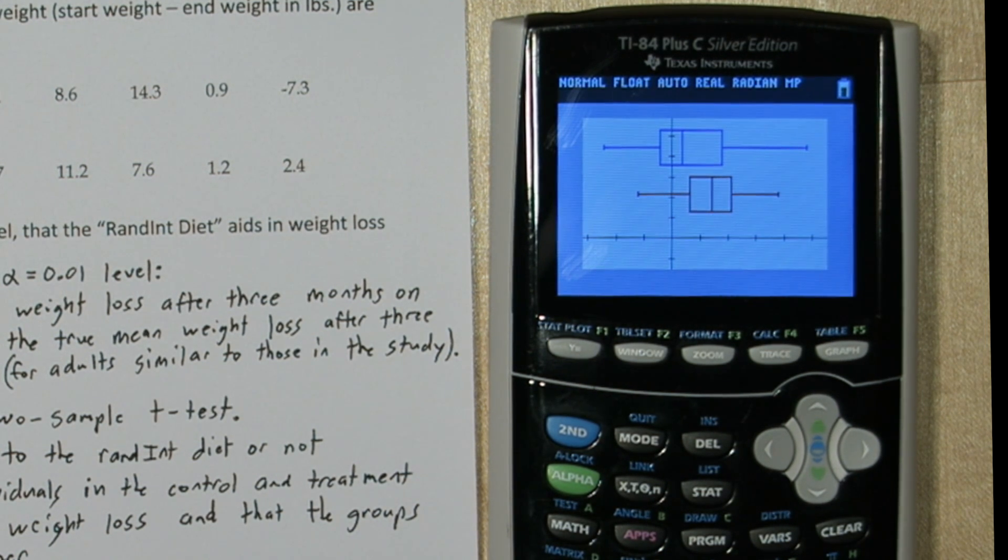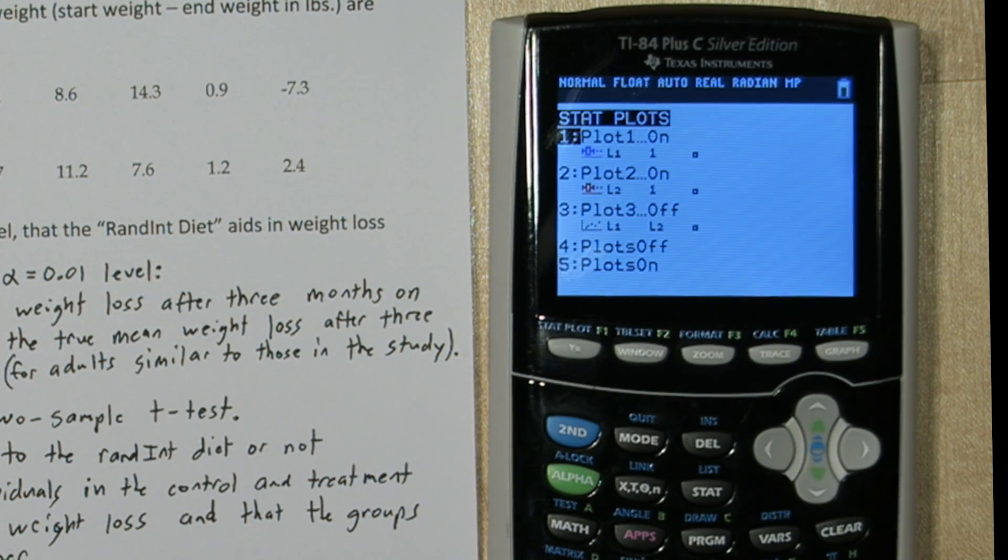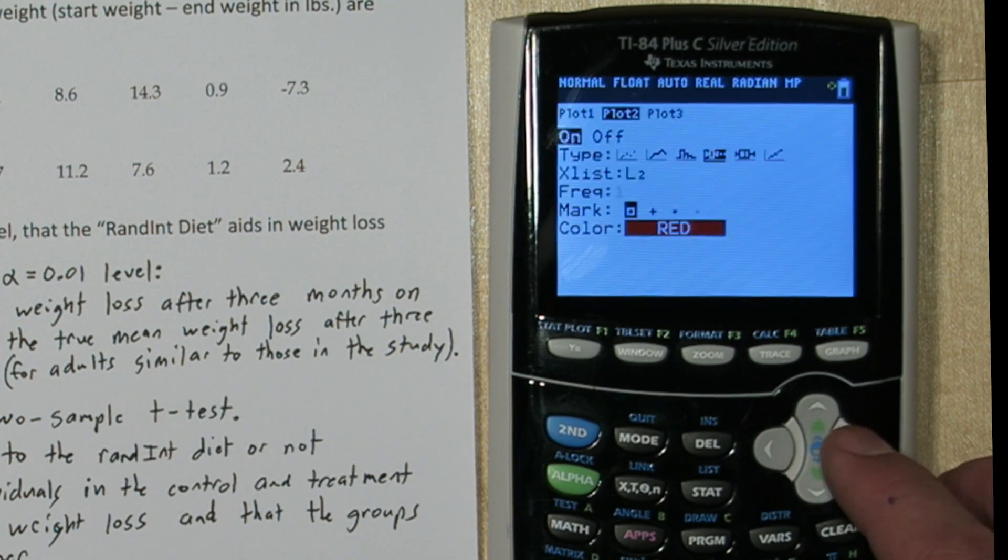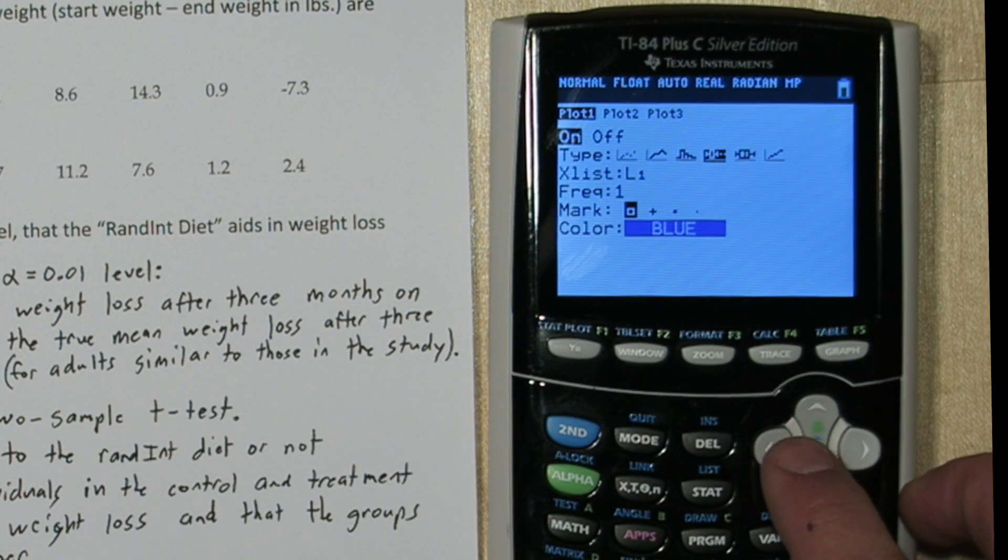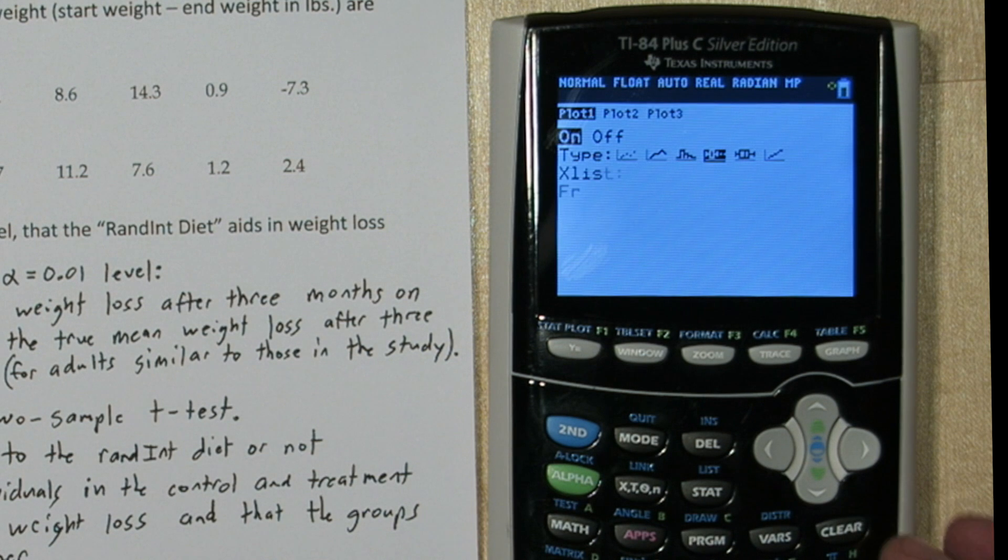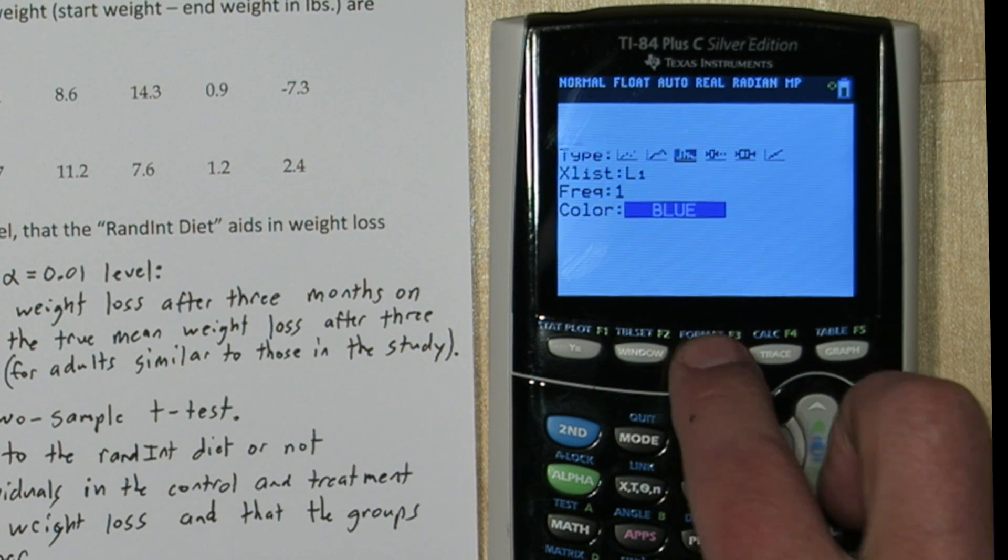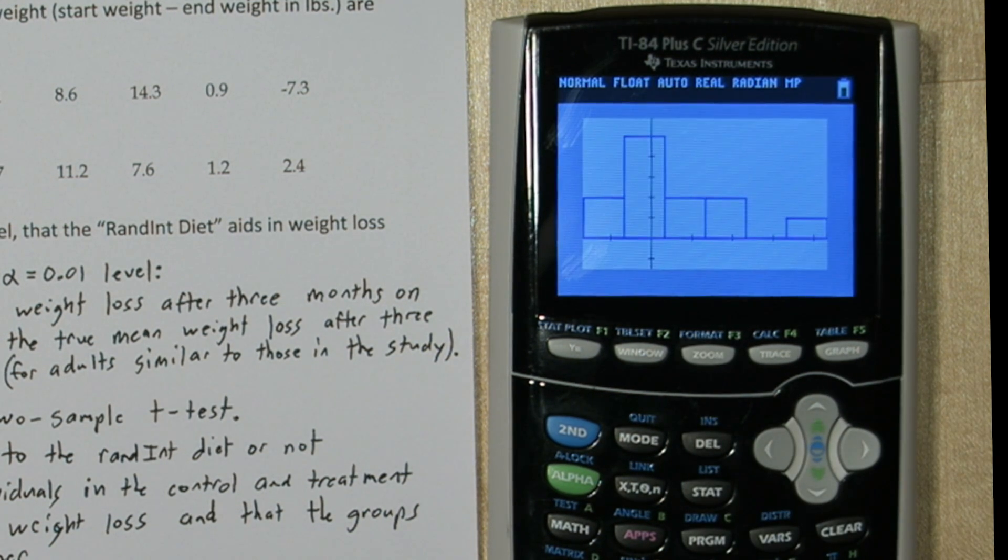Now we need to check that the weight loss in each group is roughly normally distributed. So it needs to be unimodal and roughly symmetric without a major skew. So to do that, press 2nd and y equals to get to our stat plot menu. I'm going to turn plot 2 off. And go back to plot 1. So on plot 1, I want to do a histogram of list 1.